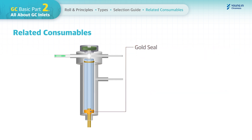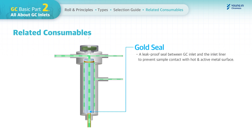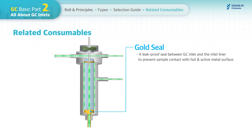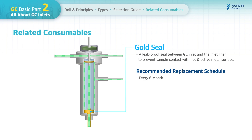The last consumable is the gold seal, located between the GC inlet and the inlet liner. It prevents sample contact with hot and active metal surfaces and is mostly used in split/splitless inlets. This needs to be replaced every six months.